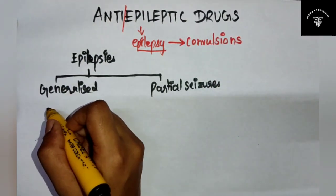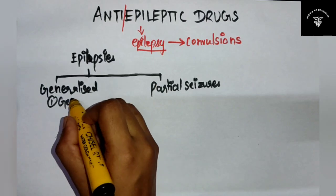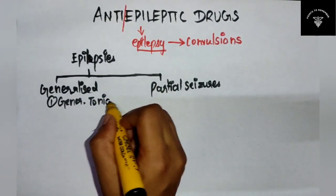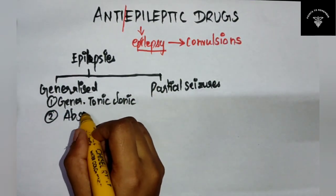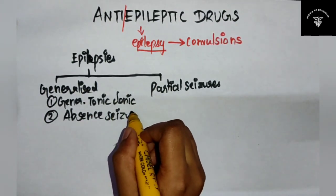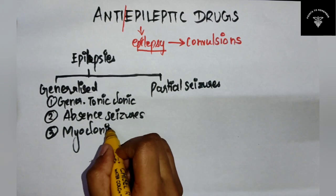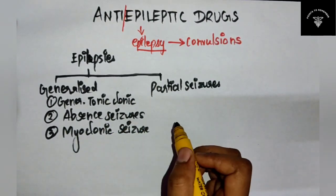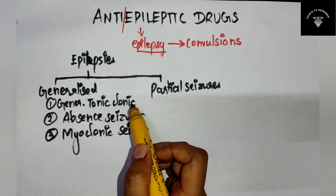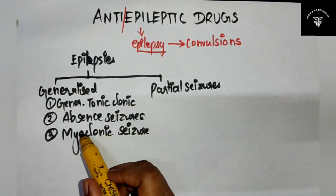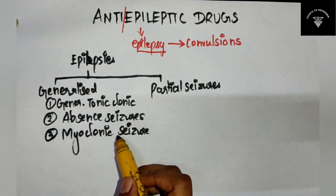Generalized seizures are further divided into generalized tonic-clonic seizures - that is grand mal epilepsy - and absence seizures, that is petit mal epilepsy. And third is myoclonic seizures.